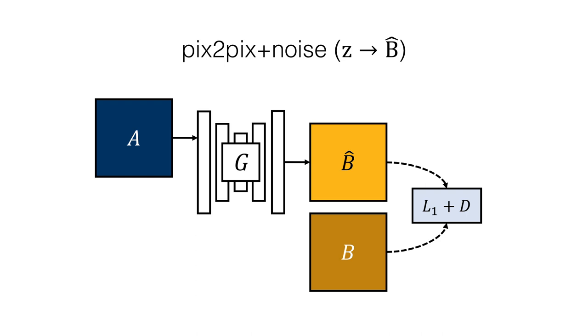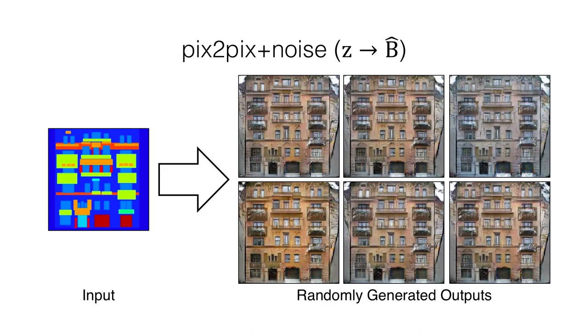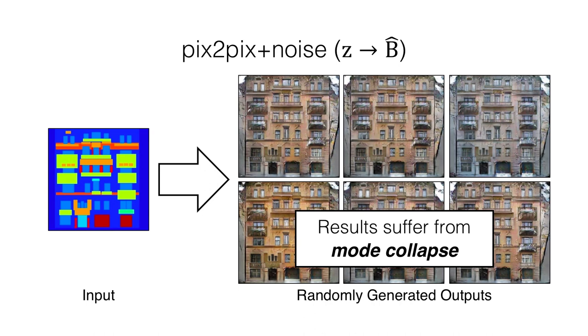One possible approach is to add stochasticity to the system by injecting a random noise vector to the generator. This baseline approach does not lead to much variation in the output. Multiple values in the latent space are being mapped to the same output. This is known as the problem of mode collapse. How can we prevent this from happening?